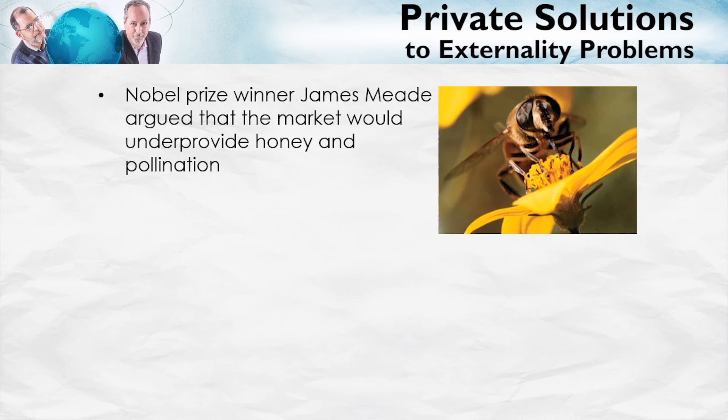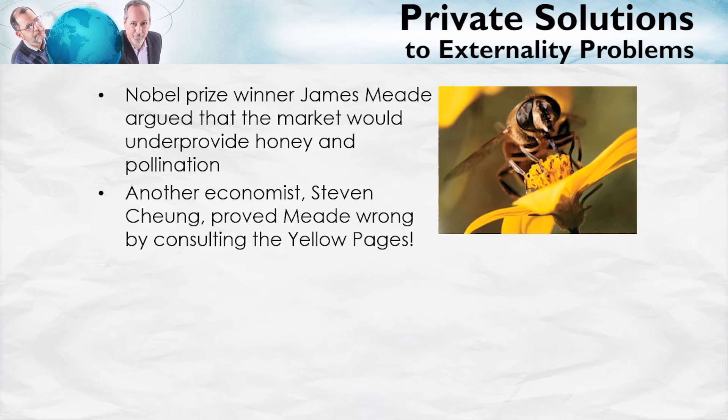Because the beekeepers were not being paid for this useful pollination services, there would be too few bees, and, as a result, too little honey, and also too little crops, and too little pollination services. However, another economist, Stephen Chung, proved that the Nobel Prize winner was wrong.